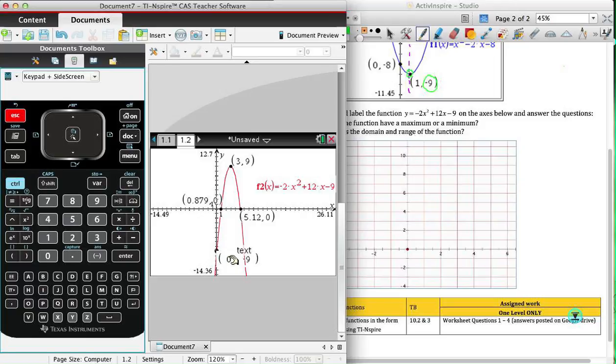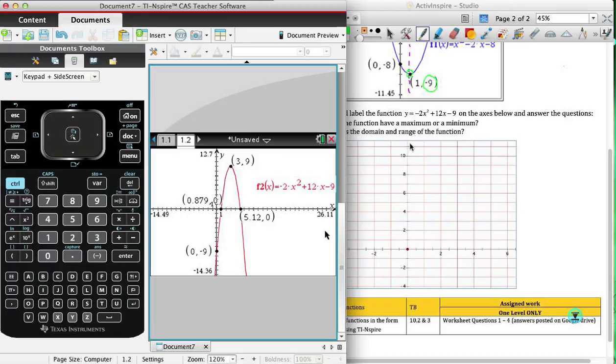There we have our y-intercept, our x-intercepts, and our maximum turning point. Then if we turn our attention now to the other questions: does it have a maximum or minimum? Clearly that's a maximum. What is the domain and the range of the function?